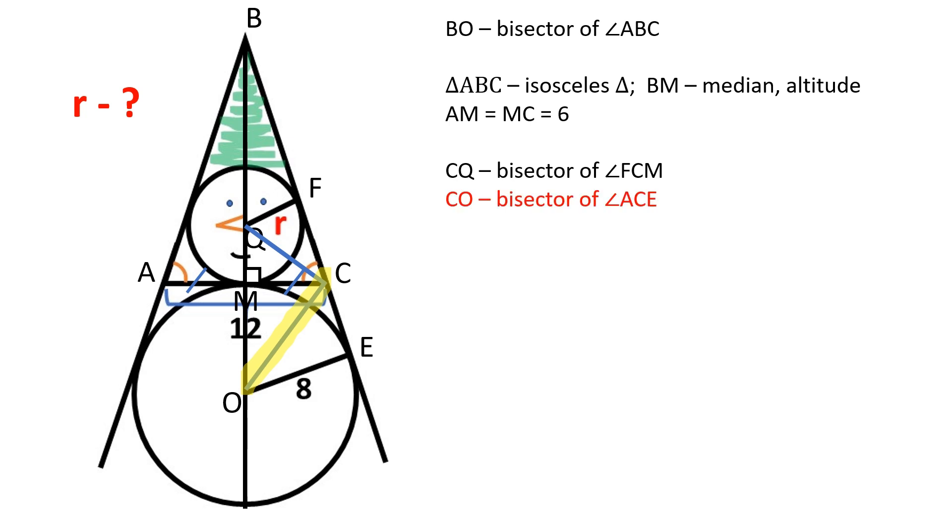CO is the bisector of angle ACE because MC and CE are tangent segments drawn from the same point. Since CQ and CO are bisectors of supplementary angles, angle QCO is equal to 90 degrees.